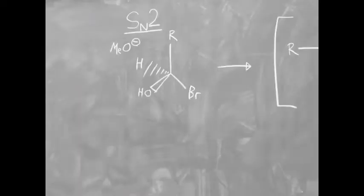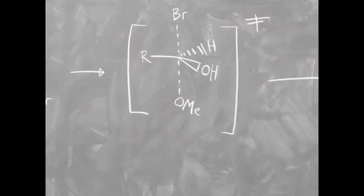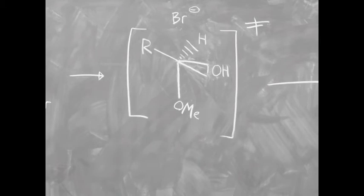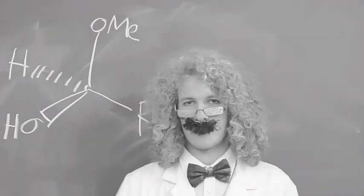This is the SN2 mechanism. This time, the methoxide group attacks as the bromine is lost from a transition state. The bromine then leaves, giving our finished product. In today's experiment, the SN1 mechanism was used.